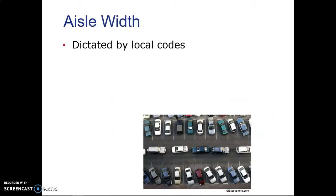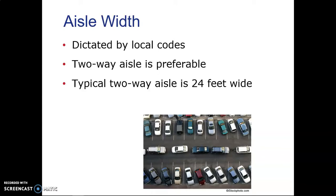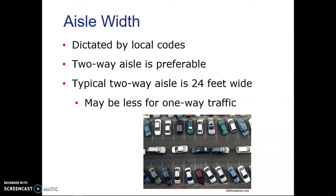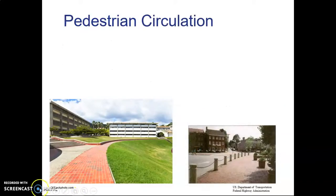Next is aisle width, which is also dictated by local codes. The typical aisle width is 24 feet wide for two-way traffic patterns. If you have one-way traffic, it can be as little as 12 feet minimum, but usually they'll do about 15 or 16 feet wide. That's where we'll stop for this video.